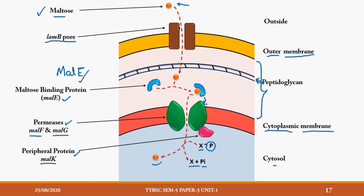To quickly revise: maltose lies outside the cell, enters through the LamB pore in the outer membrane, reaches the periplasm, and binds to the maltose binding protein MalE. The binding protein undergoes a conformational change, interacts with the transporter proteins MalF and MalG, and allows the pore to open. A peripheral protein MalK also interacts with the permeases to help transport. Note that the binding protein itself does not enter the cell.